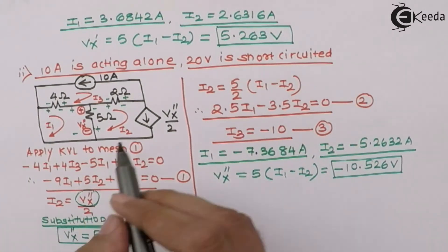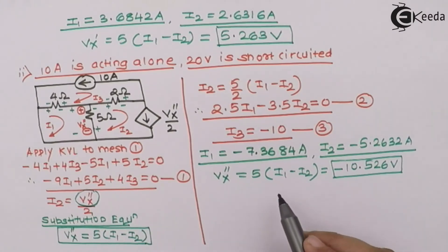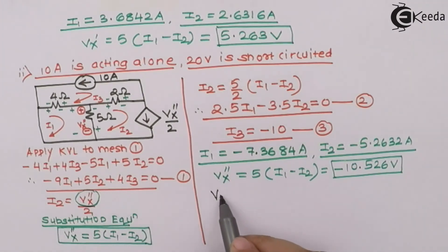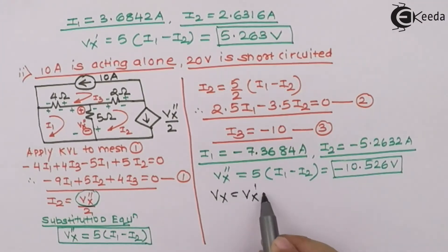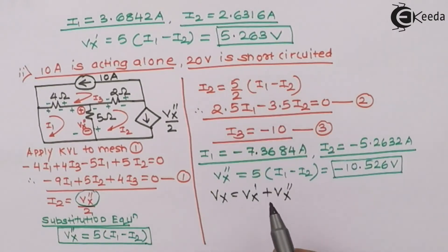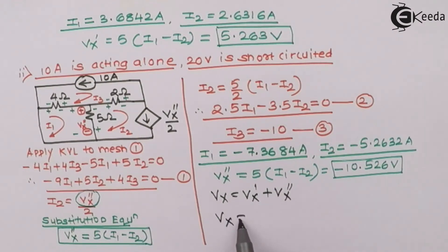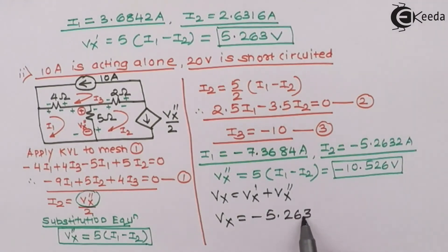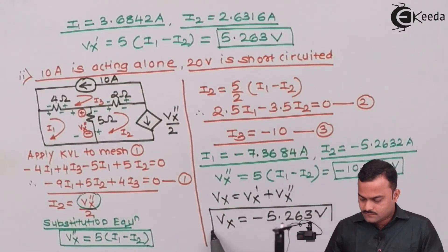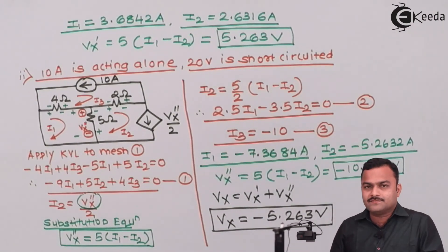So Vx double dash is minus 10.526 volts. The final answer is the algebraic sum of the two voltages: Vx equals Vx dash plus Vx double dash. Substituting the values gives the final Vx equal to minus 5.263 volts. I hope you understood the problem, thank you.